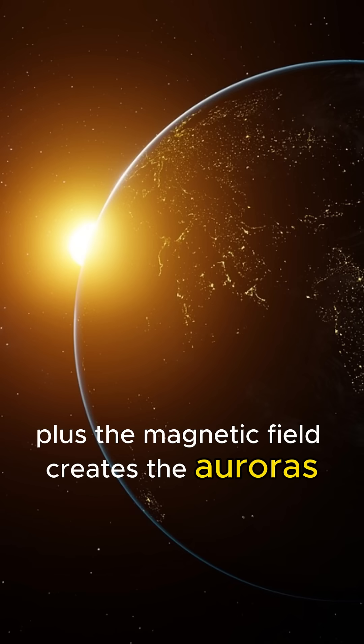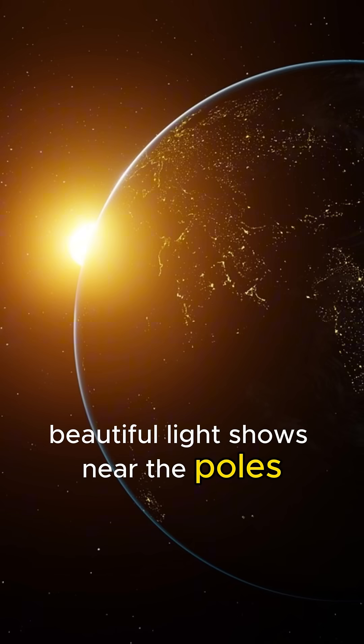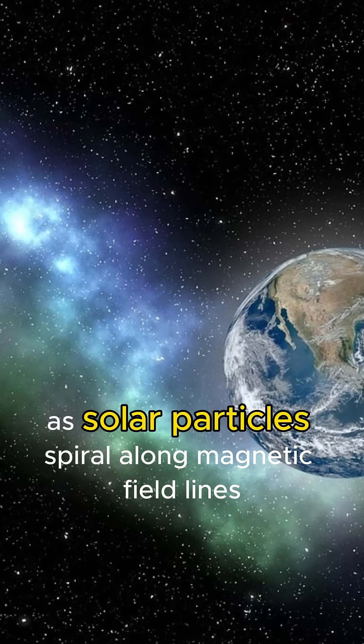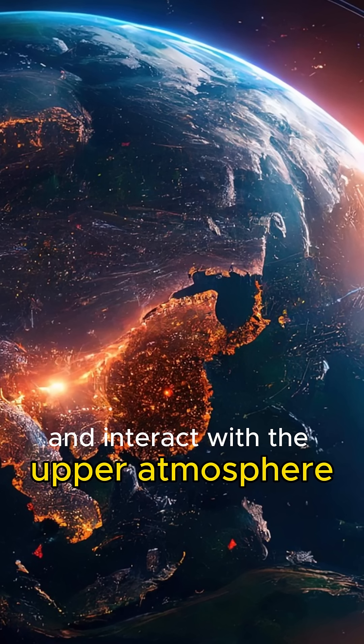Plus, the magnetic field creates the auroras, beautiful light shows near the poles as solar particles spiral along magnetic field lines and interact with the upper atmosphere.